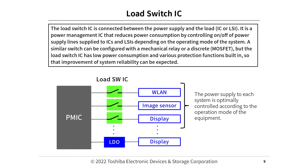The load switch IC is connected between the power supply and the load IC or LSI. It is a power management IC that reduces power consumption by controlling the on and off of power supply lines supplied to ICs and LSIs, depending on the operating mode of the system. A similar switch can be configured with a mechanical relay or a discrete MOSFET, but the load switch IC has low power consumption and various protection functions built in, so improvement of system reliability can be expected.